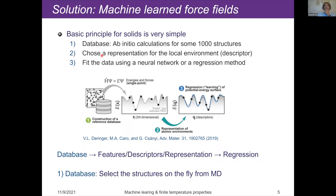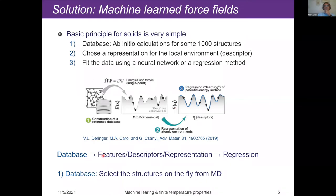So there are three steps: the database, the choice of representation for the environment around each atom, and the final fitting step using either neural networks or regression methods. This is a figure from Deringer, Caro, and Csányi that illustrates these three steps: database, feature construction, and finally regression. Concerning the database construction, we have been a little bit innovative — we select structures on the fly, something I'll talk about later.